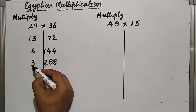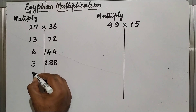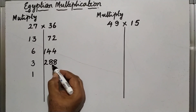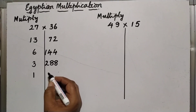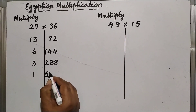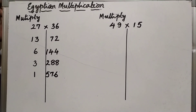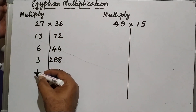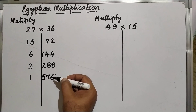Dividing 3 by 2 gives 1 and a half. That half is omitted and I take 1. I double 288 to get 576. So we are dividing by 2 on the first column and multiplying by 2 on the second column.